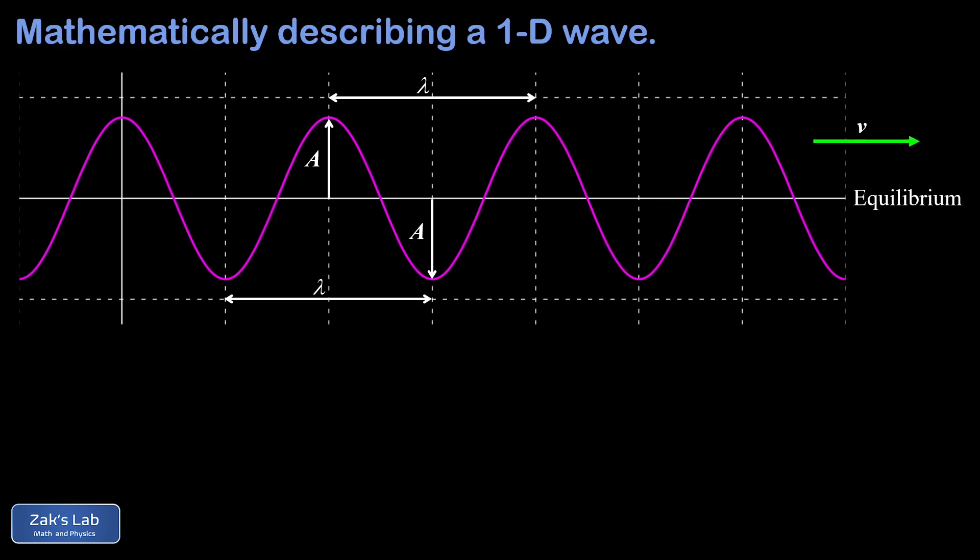So to start writing down the mathematical form of this wave, we can look at this first moment in time and say, well, we've got a pure cosine function here. And we can write that as y of x equals A cosine kx, where k is a parameter that's called the wave number, and that controls the wavelength of the cosine.